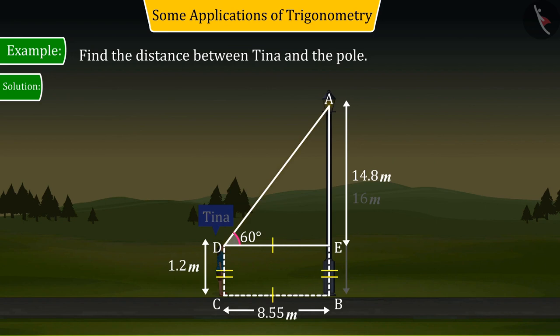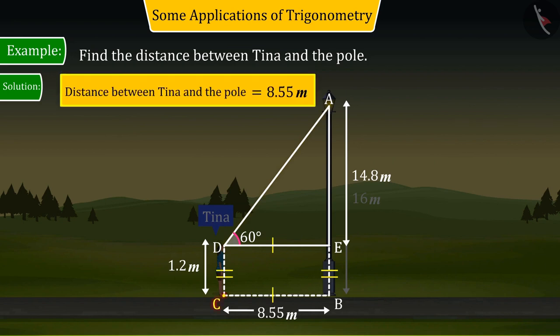With the help of which we can say that the horizontal distance of the pole from the place where Tina is standing is 8.55 meters.